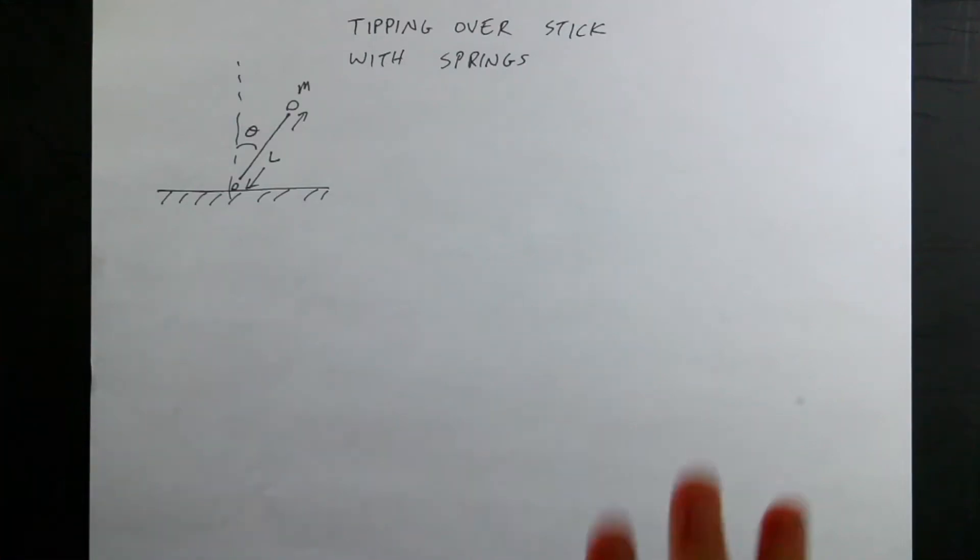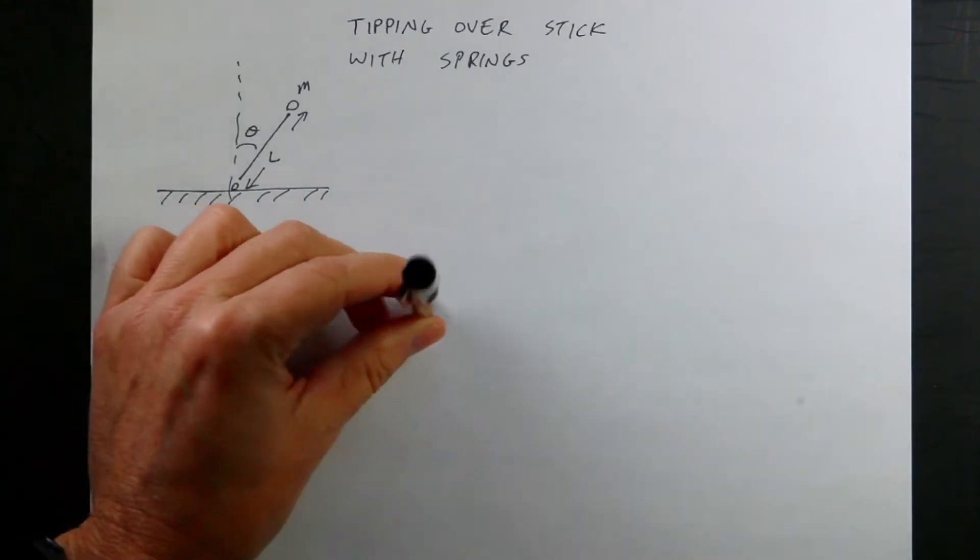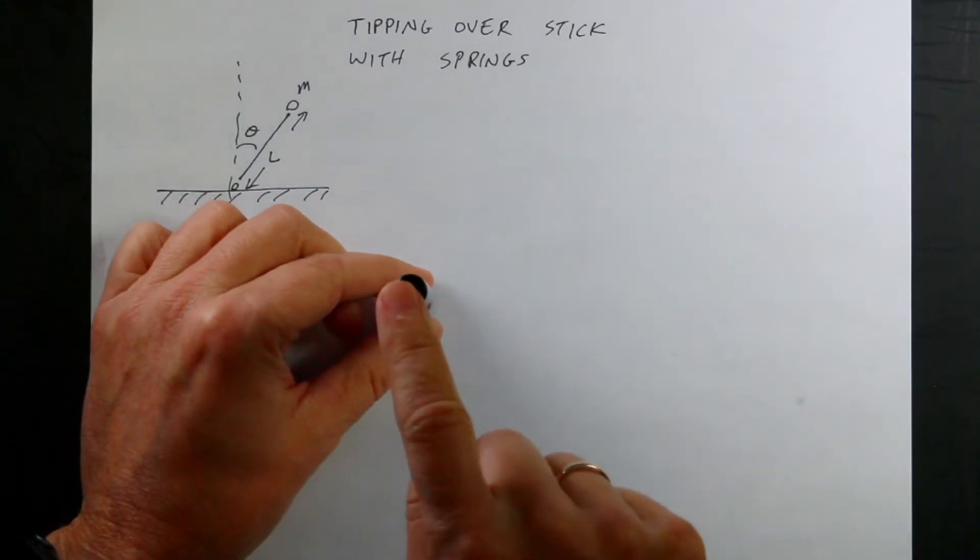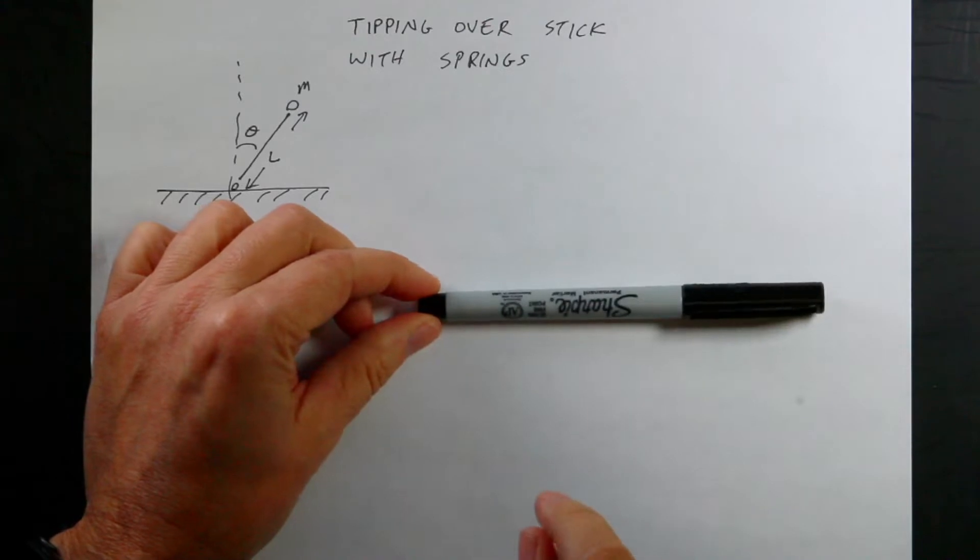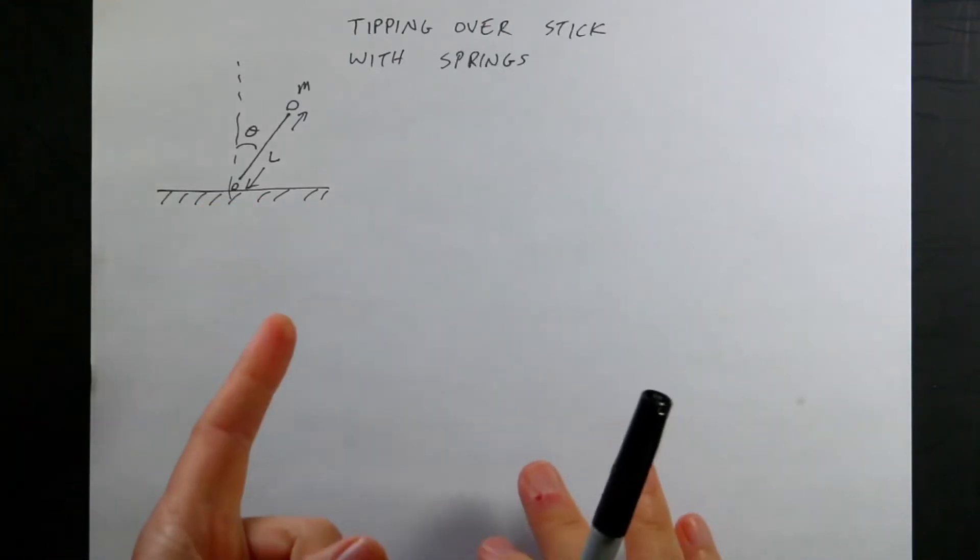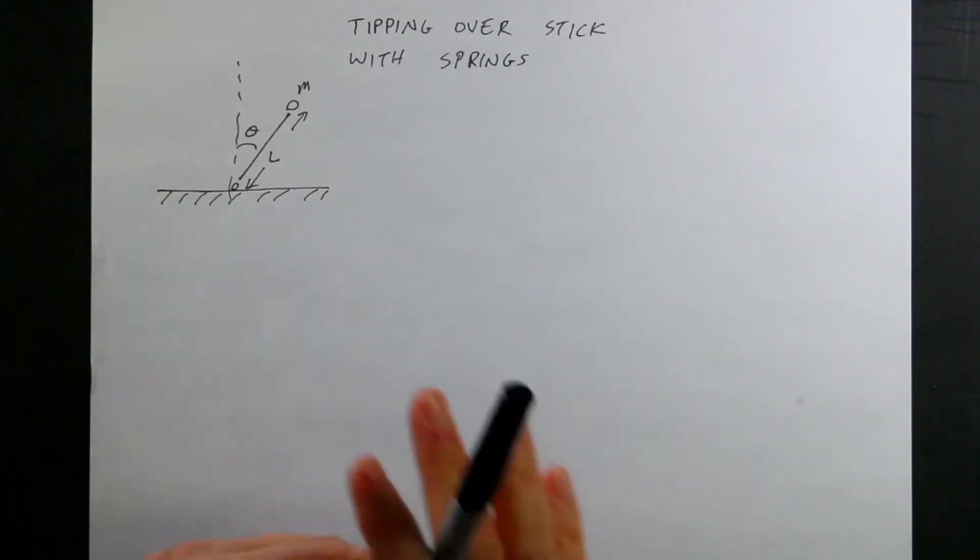I am continuing my little series on tipping over things. The idea was if you have a stick and it's tipping over like that, then how do you model that?